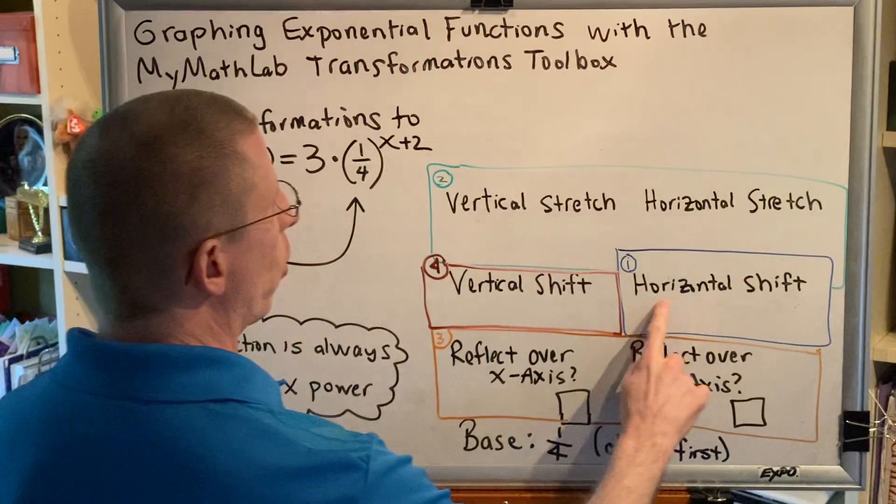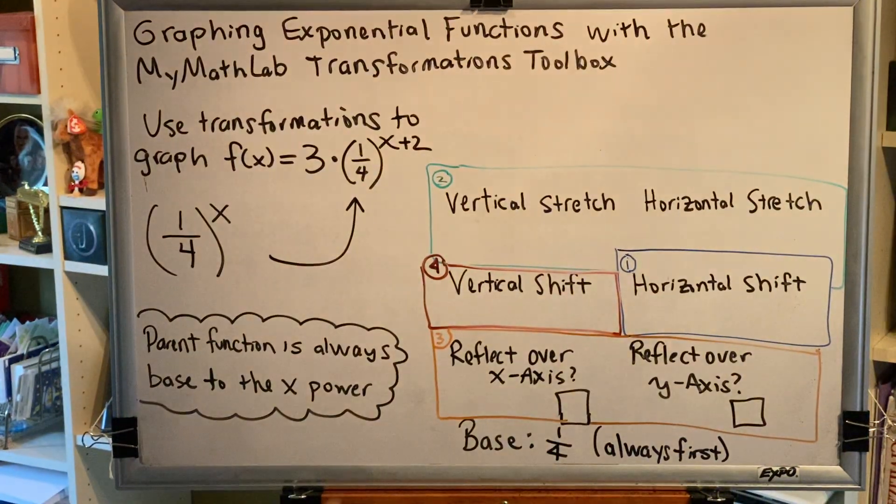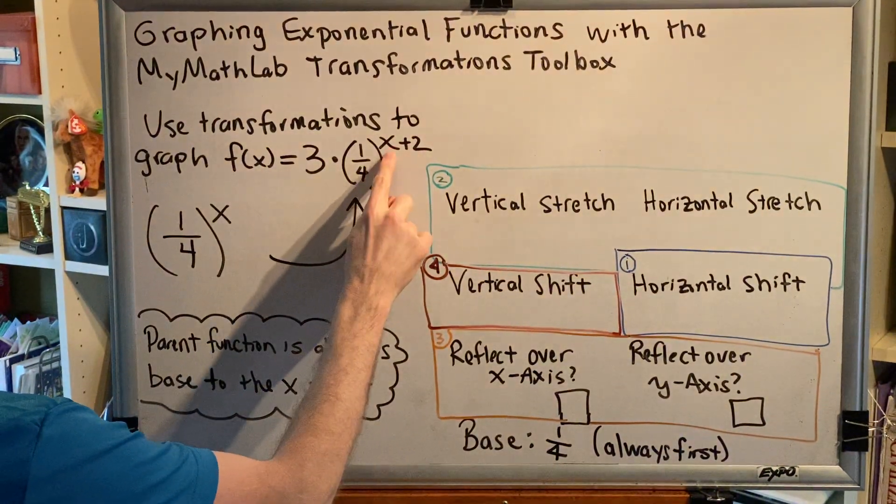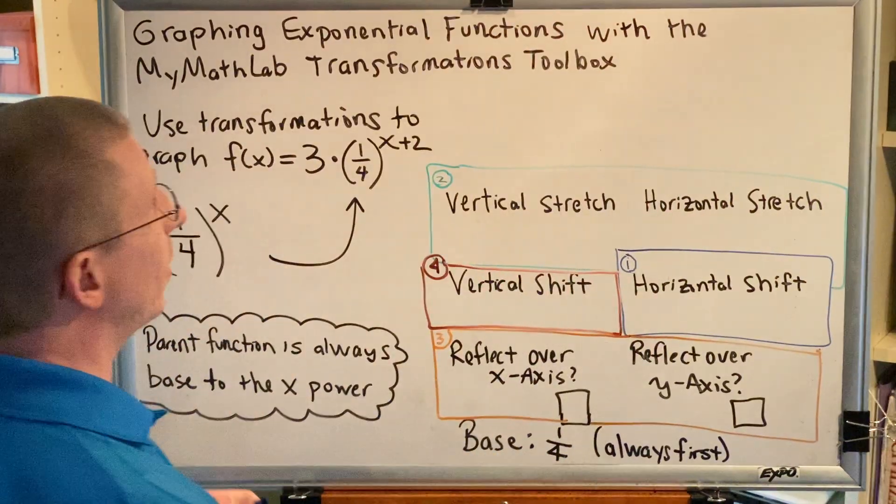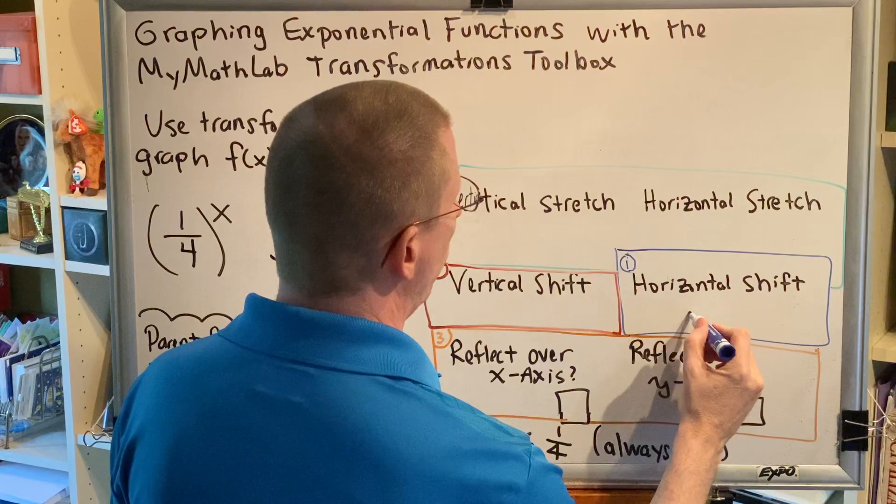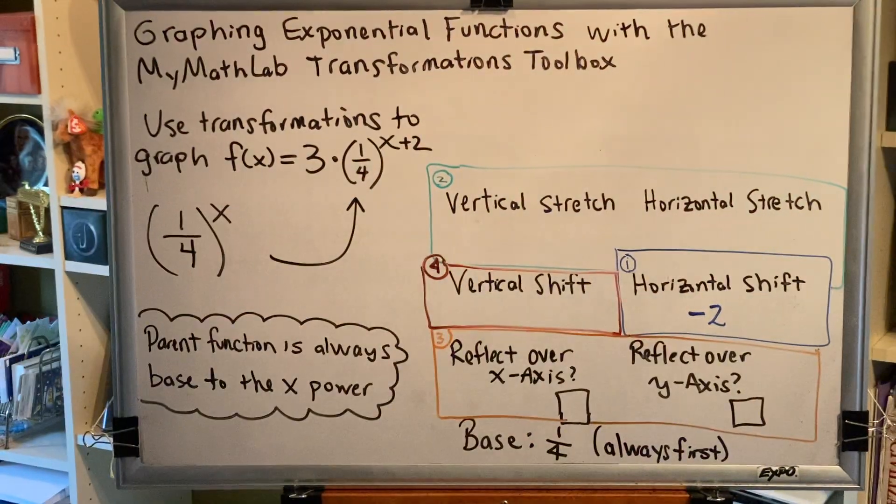First thing you should check for is horizontal shifting. That would be adding or subtracting inside close to x, which we have here shown by this x+2. That represents a transformation to the left 2, so therefore we adjust our horizontal shift slider to a value of -2.